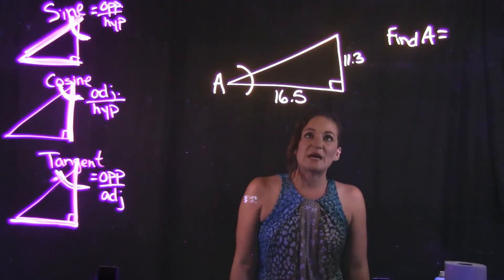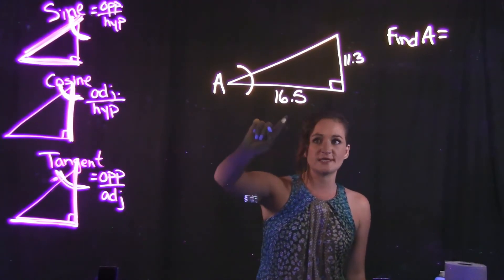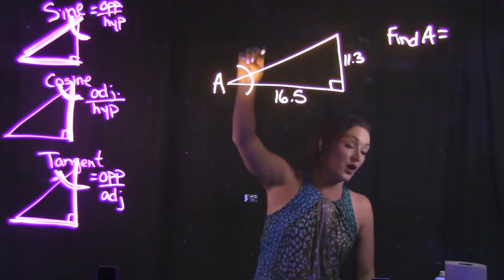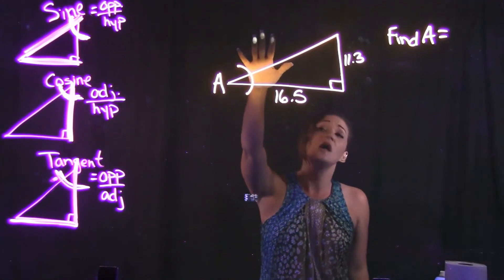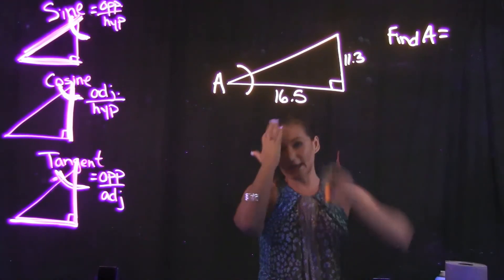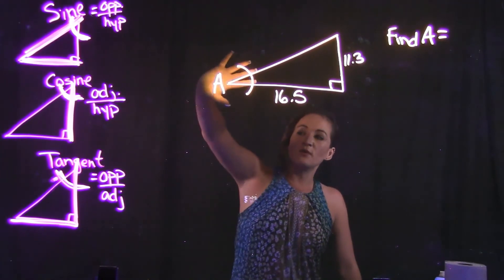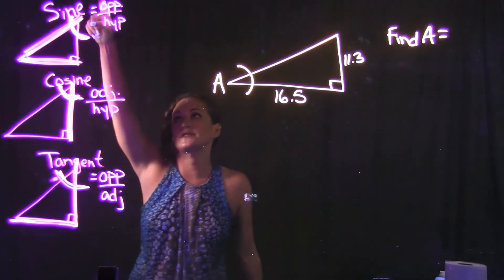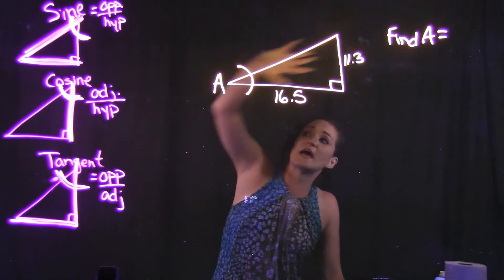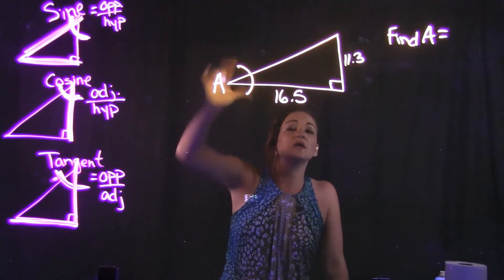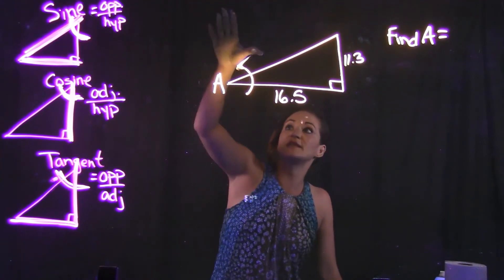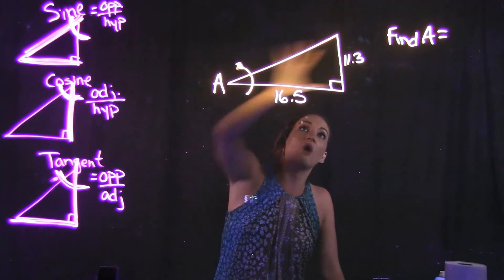For one more example, we have a right triangle with a bottom side of 16.5 and a leg of 11.3. We're solving for angle A. Although we could use the Pythagorean theorem to find the hypotenuse since we know two sides, here we want angle A. In reference to angle A, the 11.3 side is opposite and the 16.5 side is adjacent, since the diagonal is always the hypotenuse. So we know opposite and adjacent.